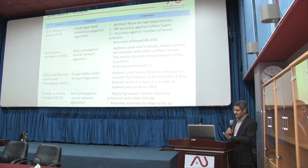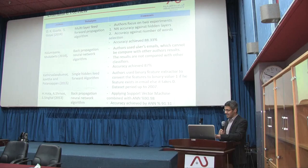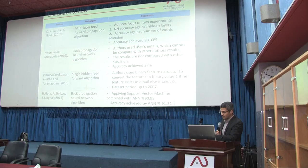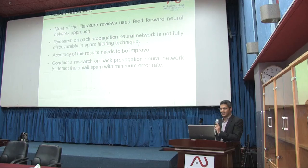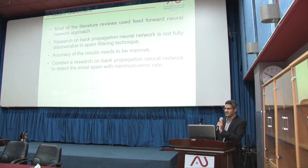The algorithms used in Neural Networks include feedforward propagation, backpropagation, and single hidden feedforward algorithms. What I discovered is that most of the literature reviews used a feedforward neural network approach, and the backpropagation algorithm is not fully explored in spam email filtering techniques, and the accuracy results need to be improved. So I will conduct my research on backpropagation neural network to detect spam filtering with a minimum error rate.